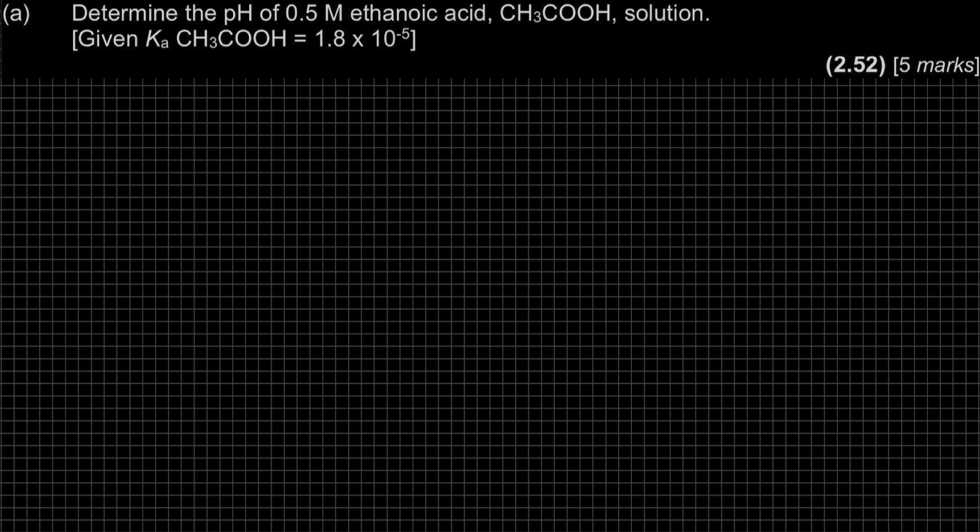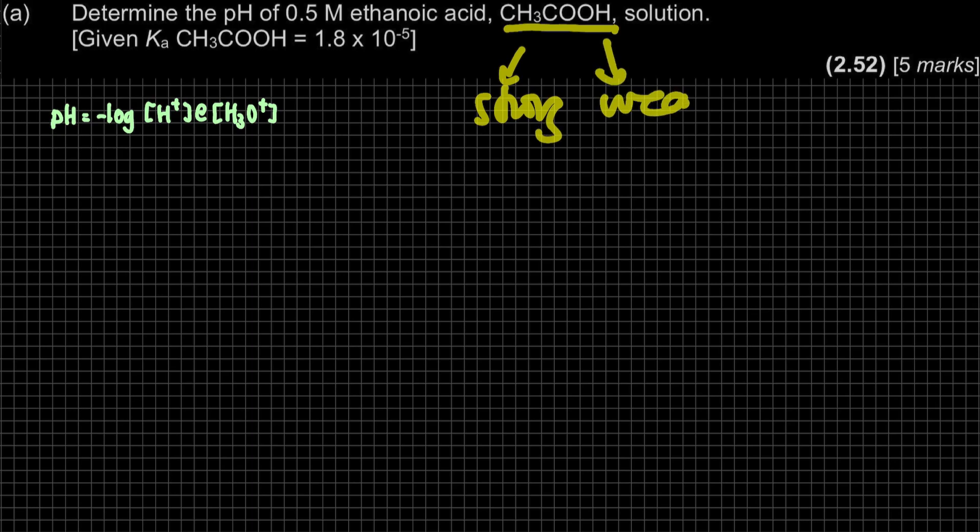For this question, they ask for the pH. So what's the formula of pH? pH is equal to negative log H+ or H3O+. From the equation, what we have is CH3COOH solution. We do not know the concentration of H+ straight away. So how do we find out the concentration? First we have to write down the equation. For a given acid or base, you have to know when you write down the equation, is it a strong or a weak acid?